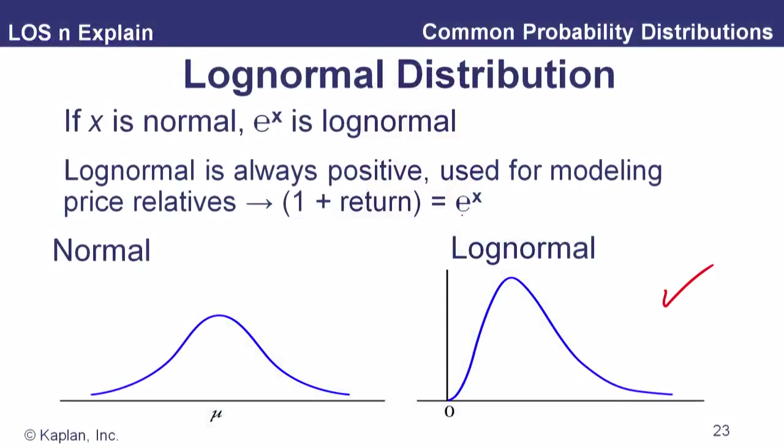Why do we call it the log normal? A log normal random variable, if we take the natural logarithm of each value, those natural logarithms form a normal distribution. Another way to put this: if we generate values where all the x's are normally distributed, then e to the x is distributed log normally. It's always positive and used for modeling price relatives — one plus the return — since the return can only be minus 100% at worst, meaning this is bounded by zero.